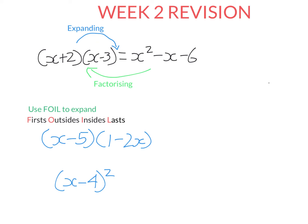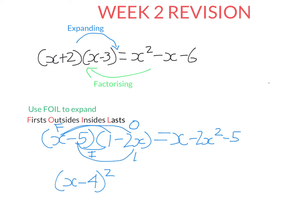FOIL stands for firsts, outsides, insides, last. So when we're doing something like this, F means we multiply the things that occur first in each bracket — X times one gives us X. Outside is the thing on the outsides of each bracket, so X times negative two X is negative two X squared. Then I is the thing on the insides of each bracket, so here that's negative five times one, which is negative five.